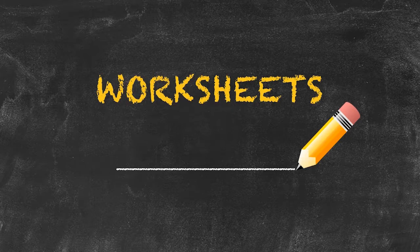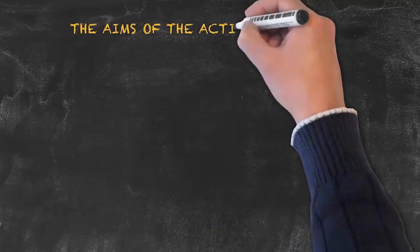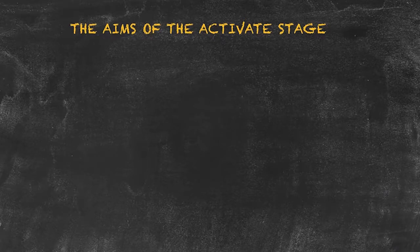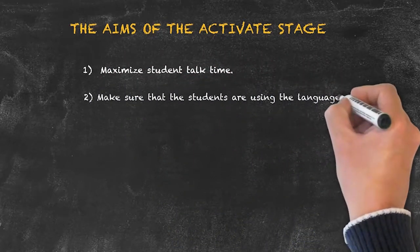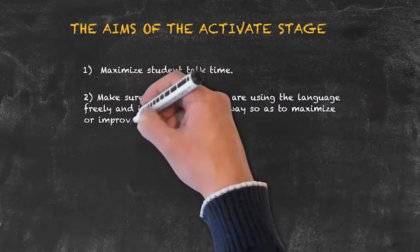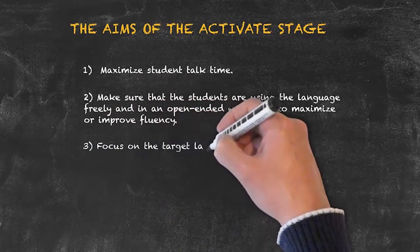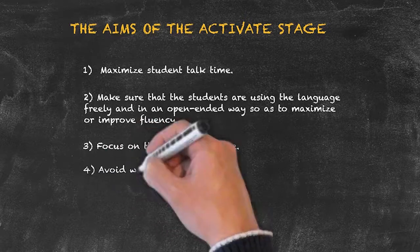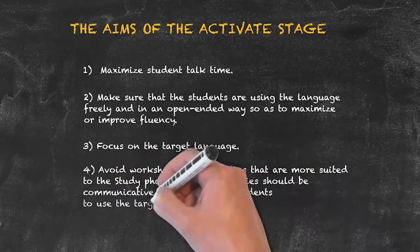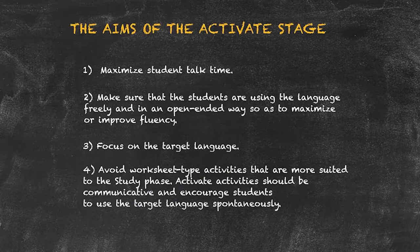When asked to explain something to a low-level student, be sure to word your answer as if you're really explaining it to the low-level student, rather than your tutor. Be sure to use basic language and be as clear as possible. Finally, when asked to give an activate stage idea, please bear in mind the aims of the activate stage. These are: 1. To maximise student talk time. Be sure that your activity allows for the students to speak as much as possible. 2. Be sure that the students are using the language freely and in an open-ended way, so as to maximise or improve fluency. 3. Focus on the target language. We always want to be ensuring that our students are using the very language point that we've been explaining. Finally, keep in mind that these shouldn't be worksheet-based activities, where worksheets are more useful for the study stage, rather than the activate stage.